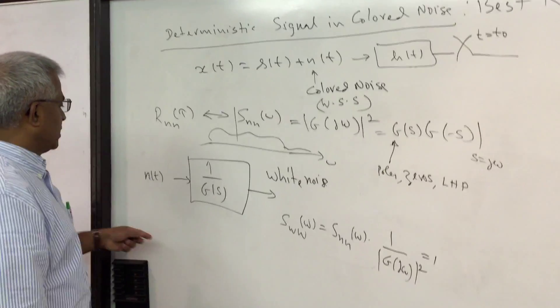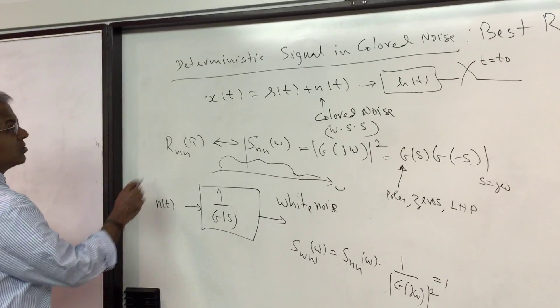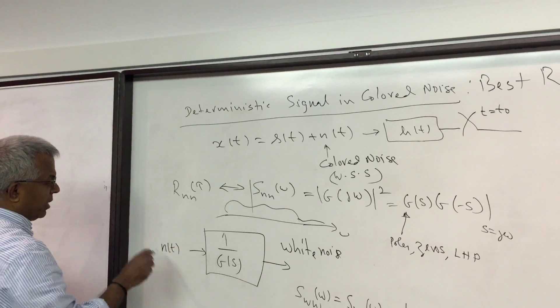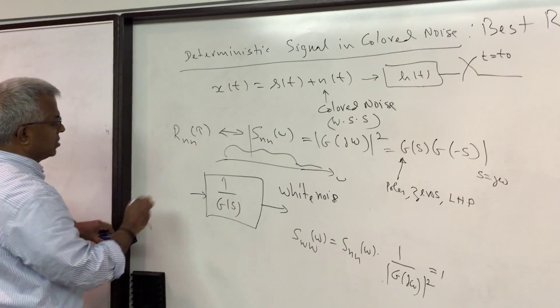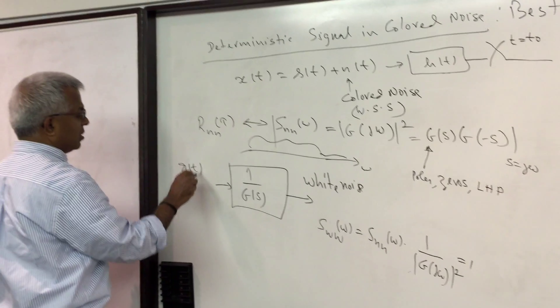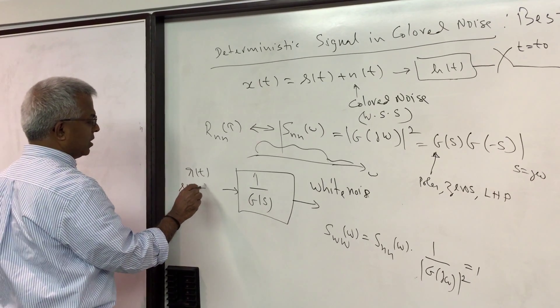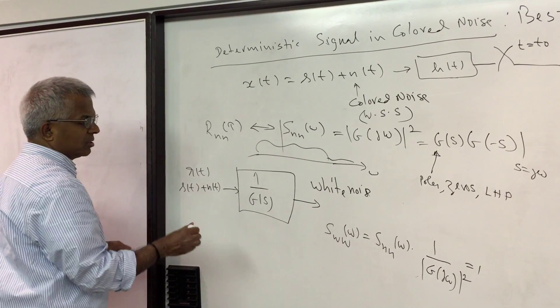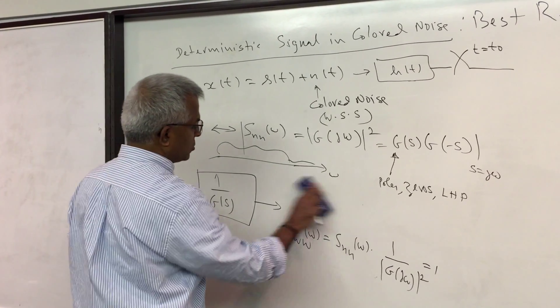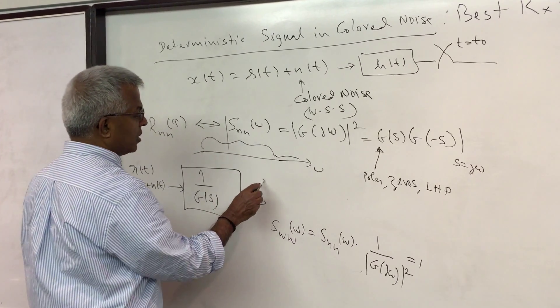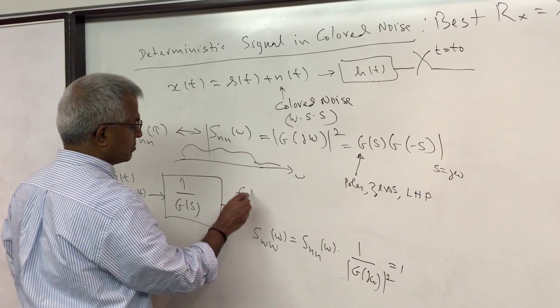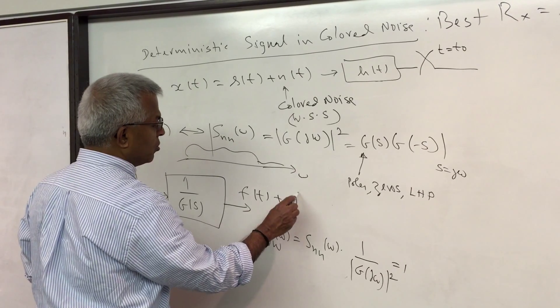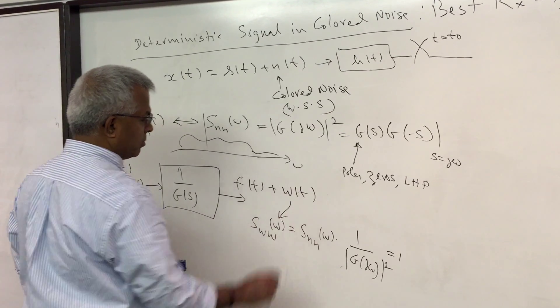So generally the idea is suppose now you pass the whole data through this. So you are going to pass r(t) which is s(t) plus n(t) through this. Then what is going to come out is you will get some new signal f(t) plus this new noise white noise with this property.